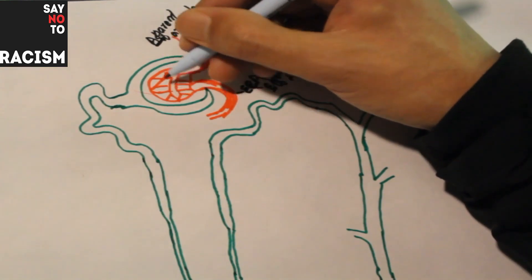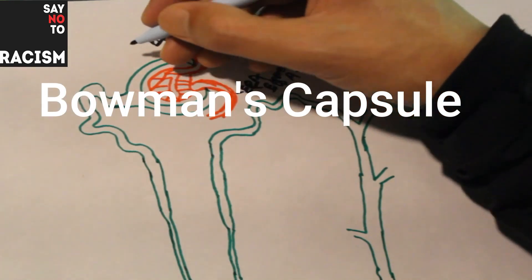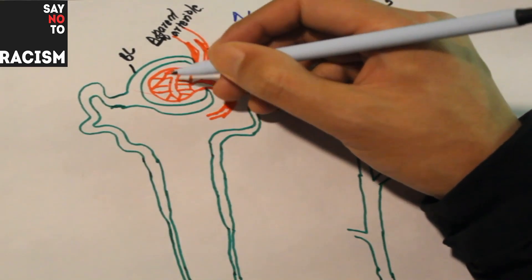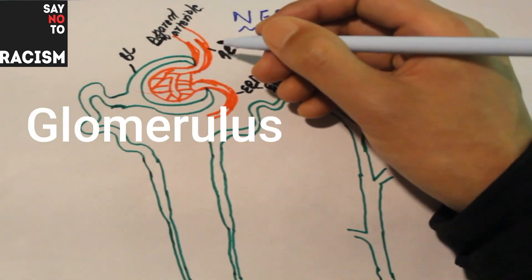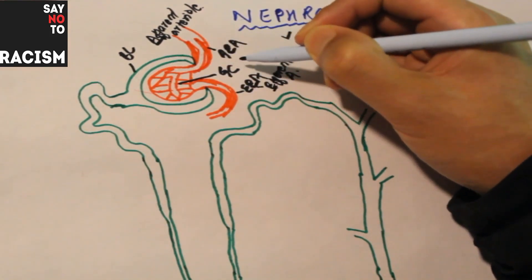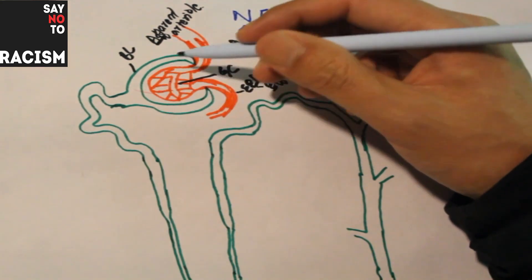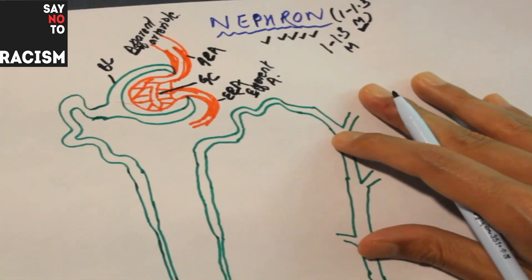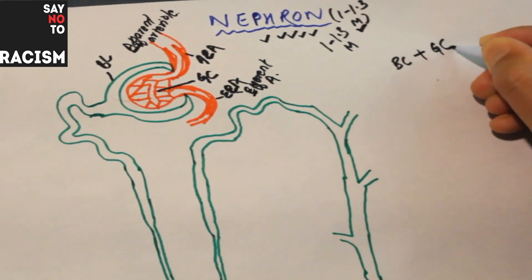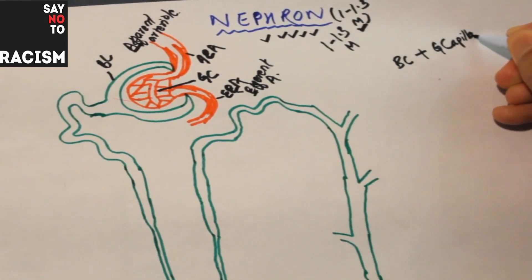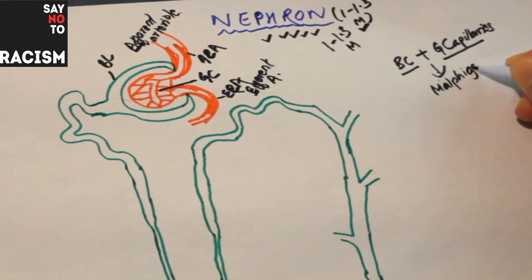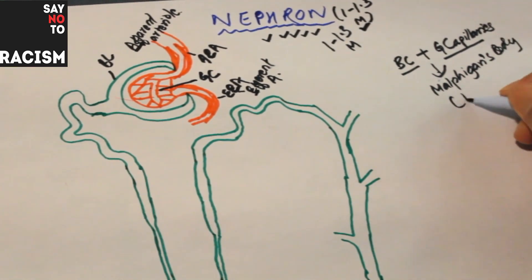The afferent arteriole comes inside this structure - the Bowman's capsule (BC). And these structures are the glomerular capillaries. Now, Bowman's capsule with glomerular capillaries - what is this structure called? This structure is called the renal corpuscle or the Malpighian body. This is important: Malpighian body = Bowman's capsule plus glomerular capillaries.